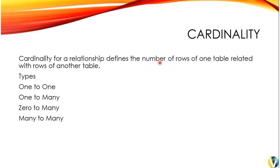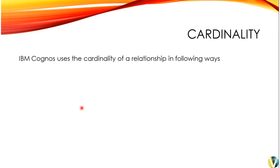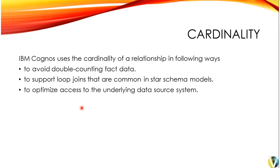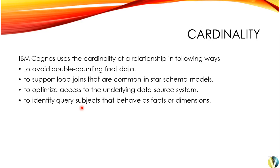So this is the example of one to one, one to many, zero to many, and many to many. Now I am going to relate this with IBM Cognos Framework Manager. IBM Cognos uses the cardinality of a relationship in the following ways: to avoid double counting for fact tables; to support loop joins, stitched joins, or common joins in star schema models; to optimize access to the underlying data source system; and to identify query subjects that behave as a fact or dimension.